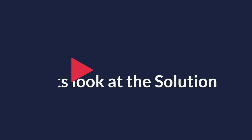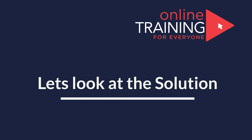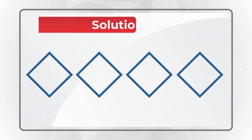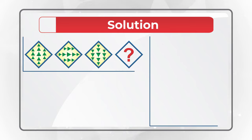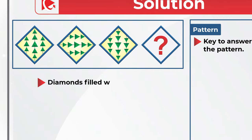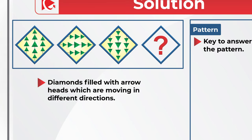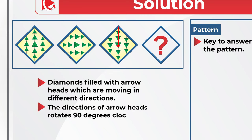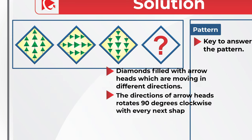The key to answering this question is to detect the pattern. If you look closely, you will see the diamonds filled with arrowheads — triangles — which are moving in different directions. The direction of the arrowheads rotates 90 degrees clockwise with every next shape in the pattern.